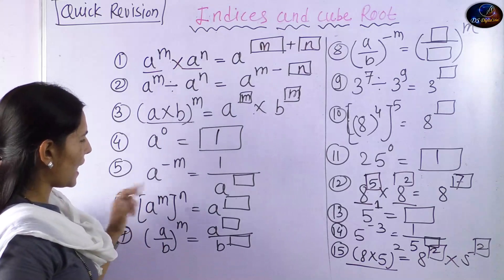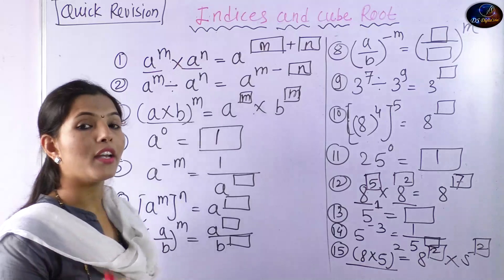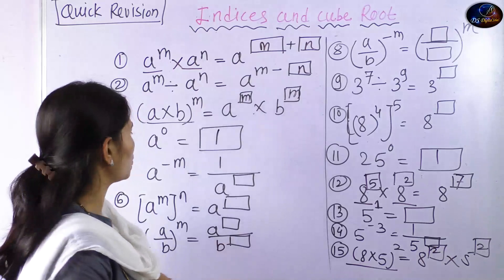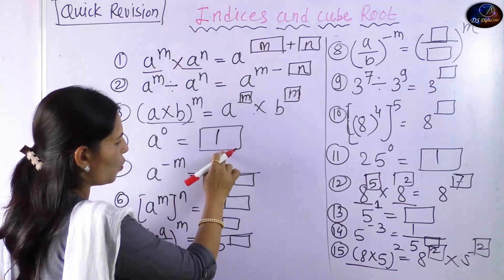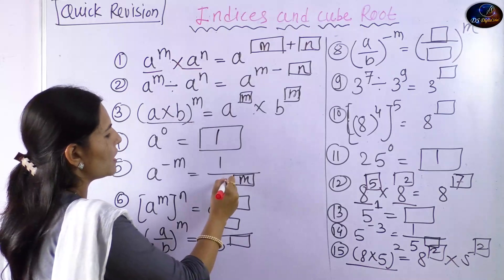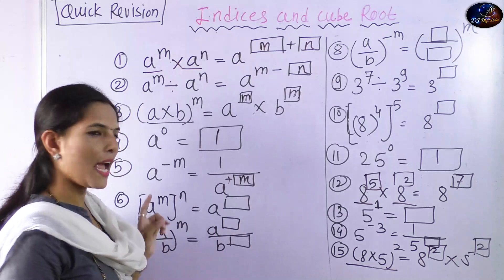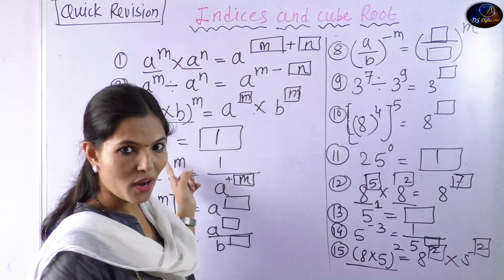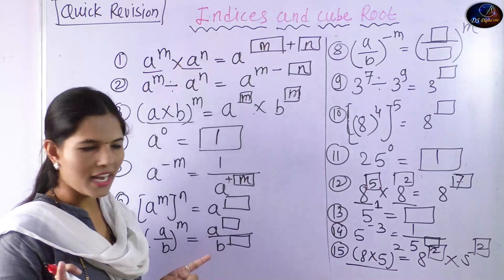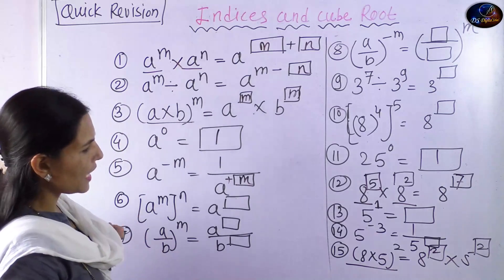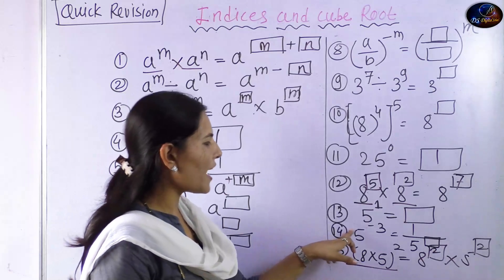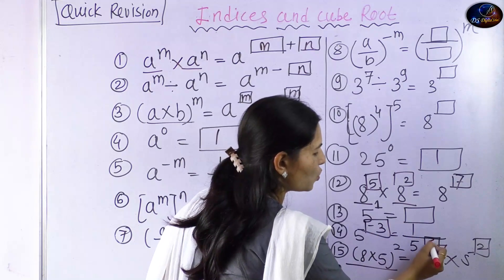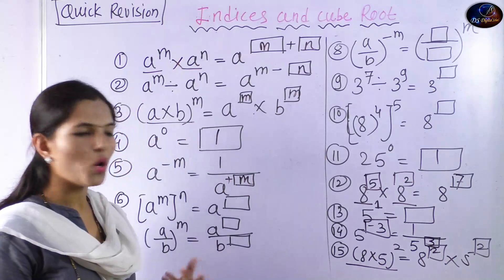Now, the negative exponent rule. What is a raised to minus m? It is equal to 1 upon a raised to plus m. When the exponent is negative, it becomes positive when moved to the denominator. For example, 5 raised to minus 3 equals 1 upon 5 raised to plus 3.